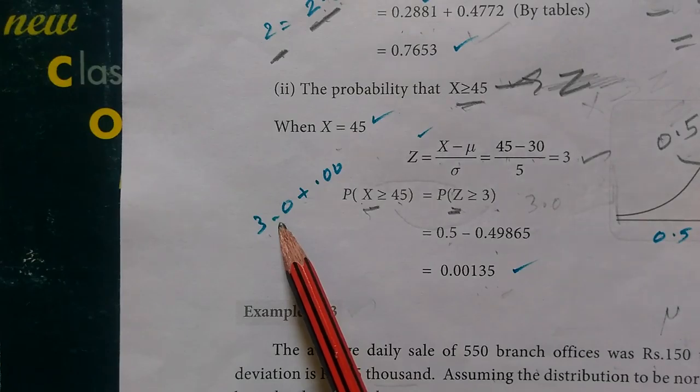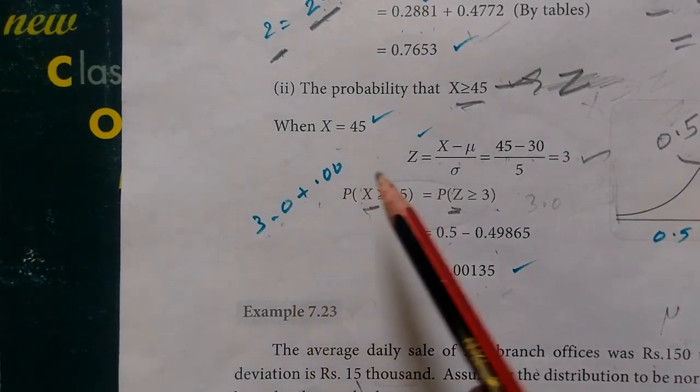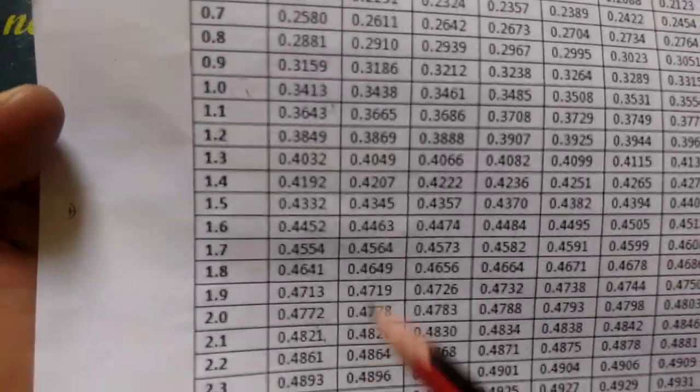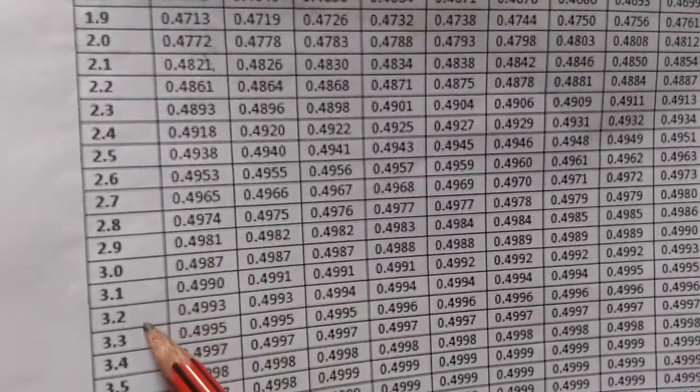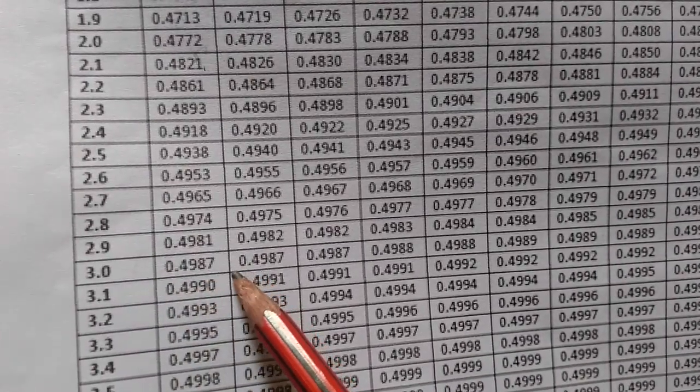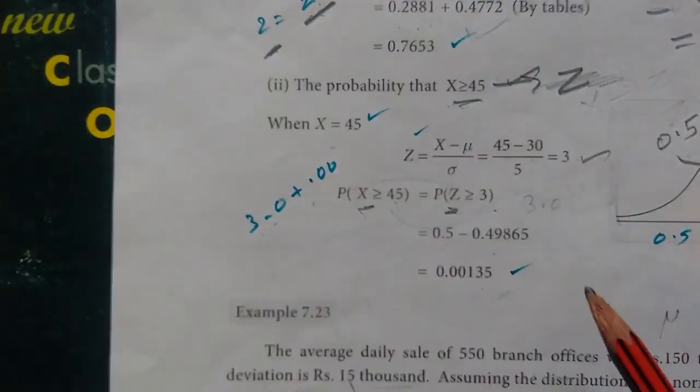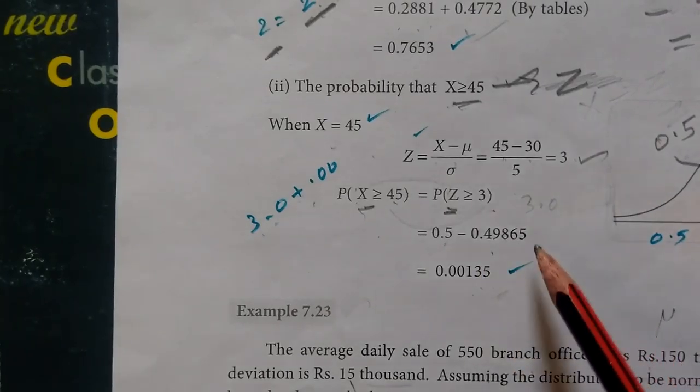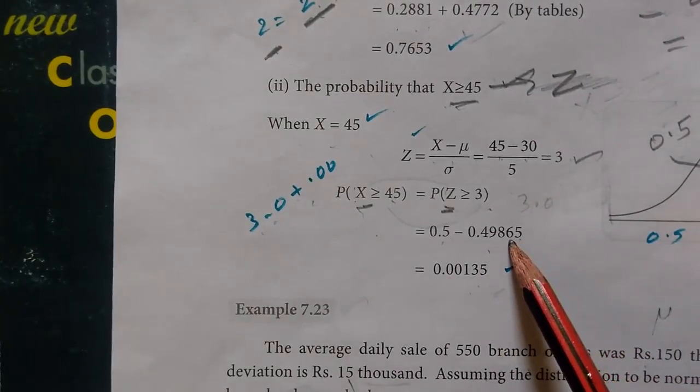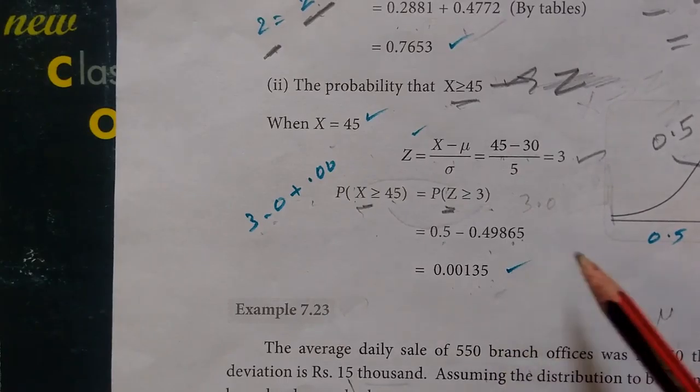For 3.0 plus 0.00, we look at row 3.0, column 0.00 in the first column. The value is 0.4987. So the answer for this is 0.4987.